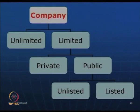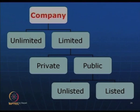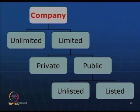In companies you have two types: you have a limited company and you have an unlimited company. In the limited companies there are private and public companies, and amongst public companies again you can have listed and unlisted companies.